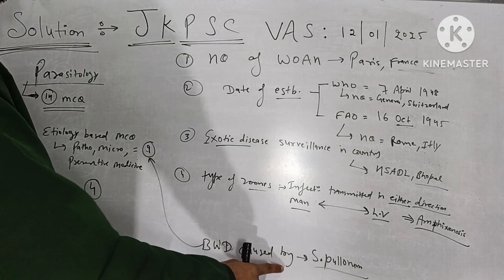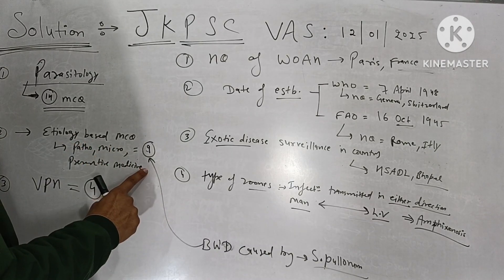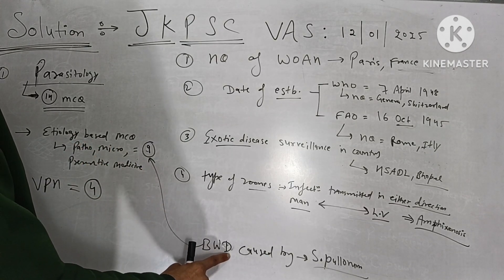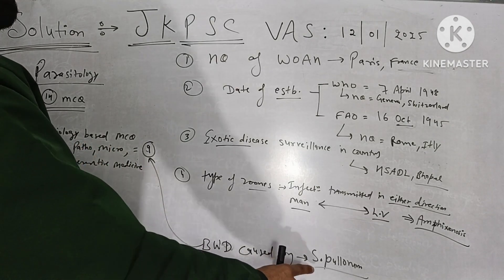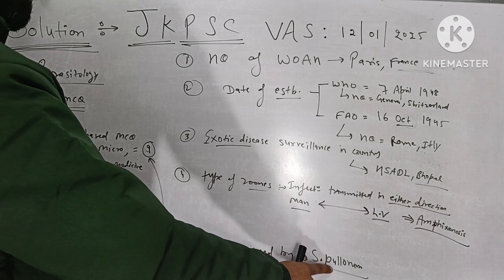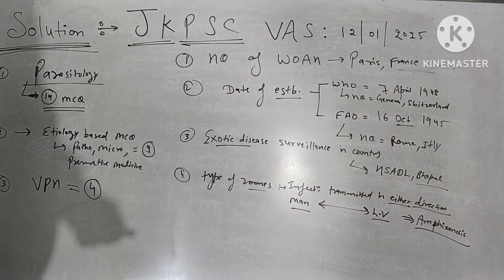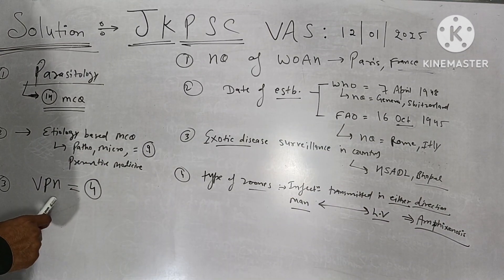One more MCQ from this etiology-based section: bacillary white diarrhea is caused by Salmonella pullorum. Next, MCQs from the VPS section follow.